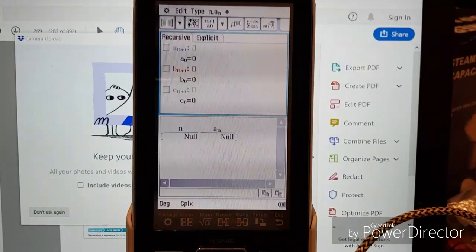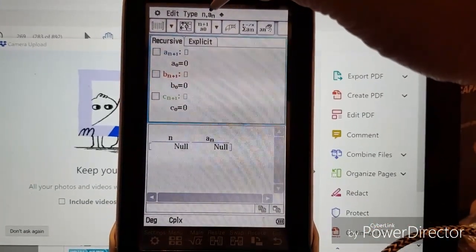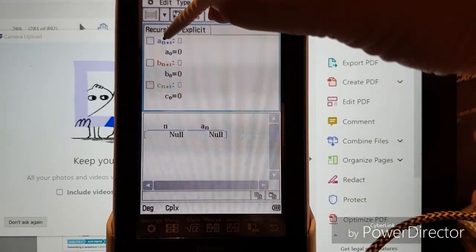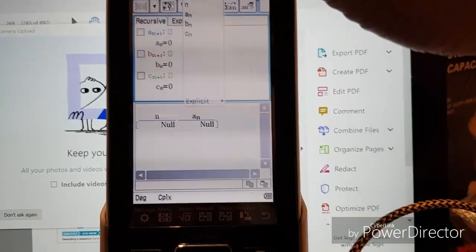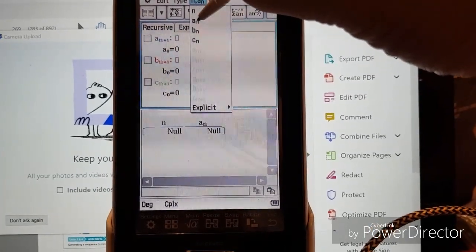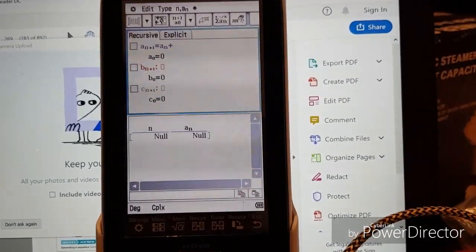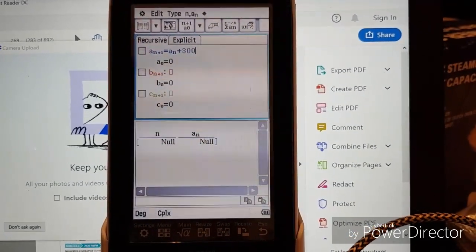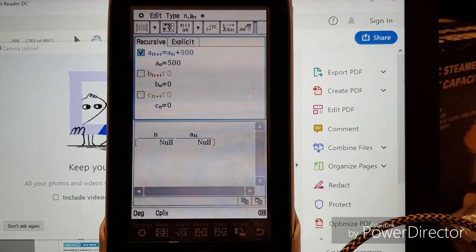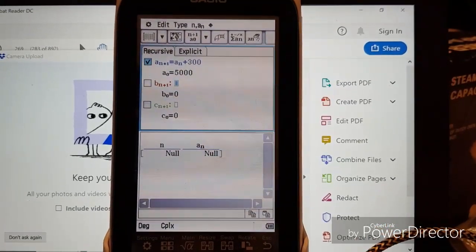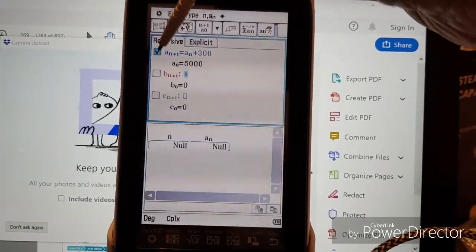Now we're going to type in our recurrence relation. Over here, instead of V they've got A. Sometimes they have A, B, or C. We're going to use the first row. So we've got A_{n+1}, and then we need to type in plus 300 and press EXE. Now our starting term was $5,000, so enter that and press EXE. Now because I've entered data, it's ticked this information.